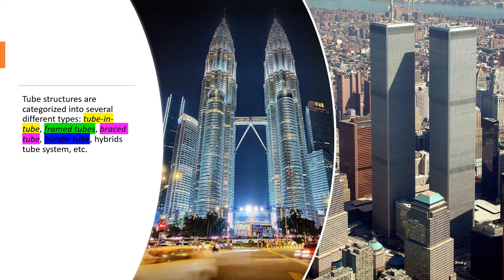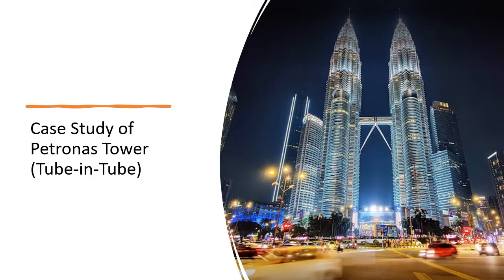Tube structures are categorized into several types: tube-in-tube, frame tube, braced tube, bundle tube, and hybrid tube system. The construction method is similar to the construction of shear walls and rigid frames. Due to trade secrecy and privacy of various contractors and designers, most step-by-step methods were not published. For this report, a case study application and lessons learned approach will be used.